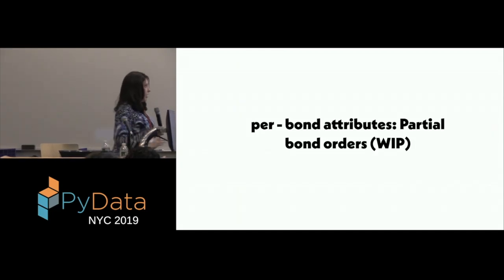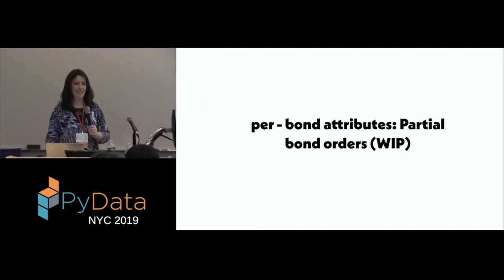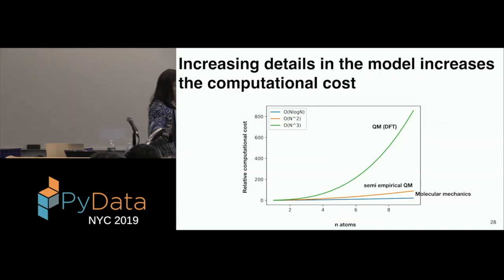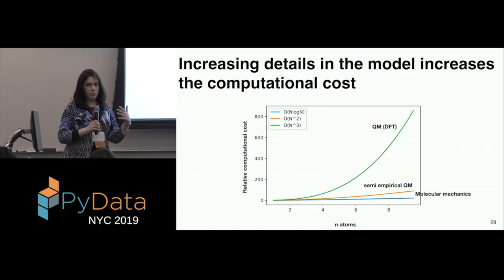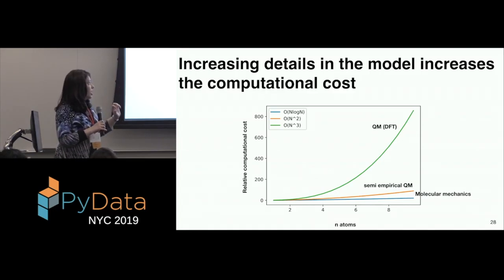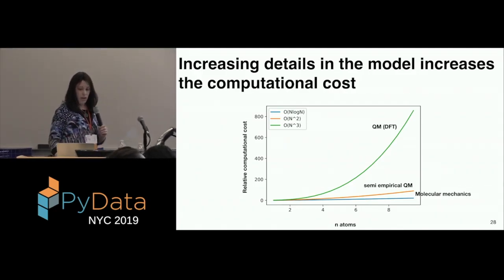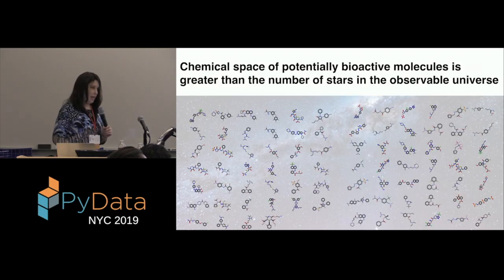So now we're going to talk about the per bond attribute, which is something called the partial bond order. So why do we need to predict the partial bond order? So it turns out there are several levels of detail you can put into your molecular model. So the more detail you have, the more expensive this model will be. And what I'm showing over here is how these different models grow with the size of the system. So in this case, quantum mechanics calculations, which is already over here, we're already using an approximation of density functional theory, grows by an order of n cubed. And then semi-empirical quantum mechanics methods grow an order of n squared. And the molecular mechanics, which is what we usually run, is order n log n.